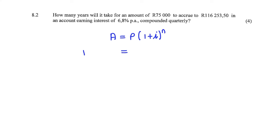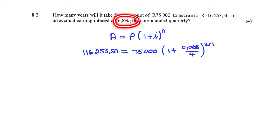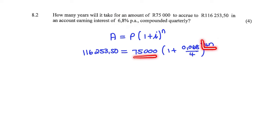that this amount grew to 116,253 Rand and 50 cents, and 75,000 Rand was originally invested. We need to be careful because it's 6.8% per annum but it's compounded quarterly, so that's why we divide by 4. Also, n represents a year but this investment is compounded four times in a year, and now we can use this to solve for n.